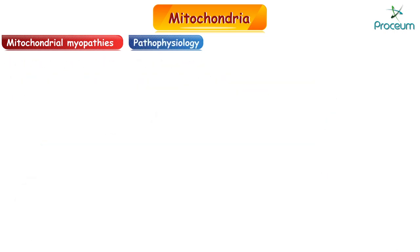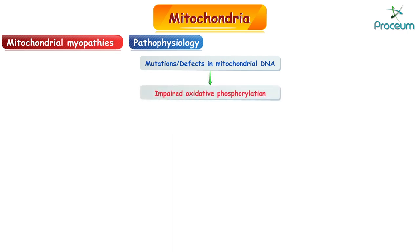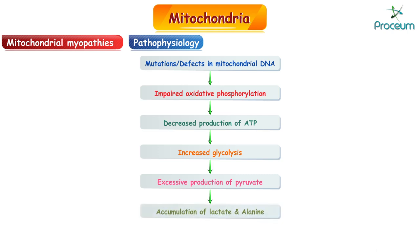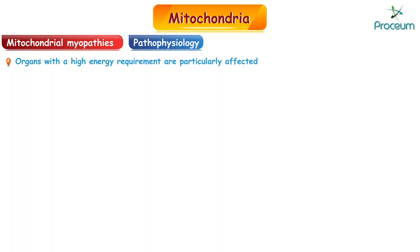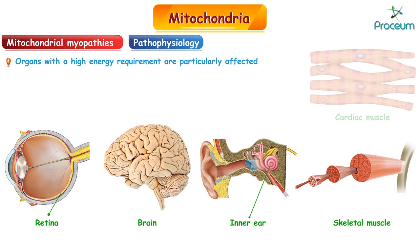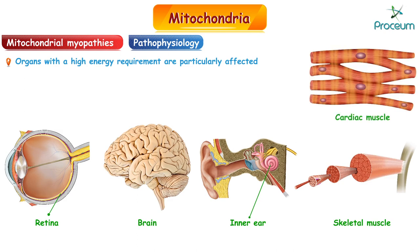In terms of pathophysiology, mutations and/or defects in mitochondrial DNA lead to impaired oxidative phosphorylation, which causes decreased production of ATP, which in turn creates increased glycolysis, leading to excessive production of pyruvate and finally accumulation of lactate and alanine. Organs with high energy requirements such as the retina, brain, inner ear, and skeletal and cardiac muscles are particularly affected.